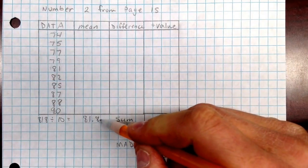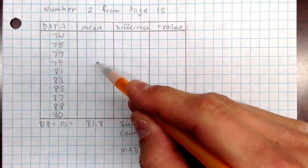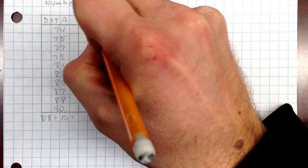So the mean is 81.8 and remember I put it underneath here so I remember I have to fill all these in with it. So then put 81.8 in all of these.